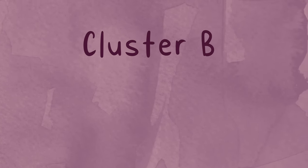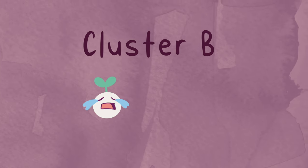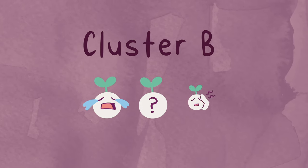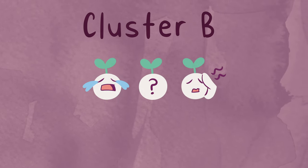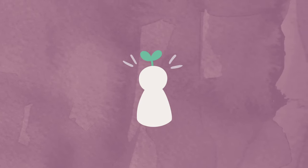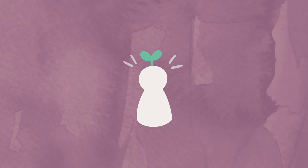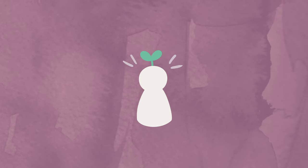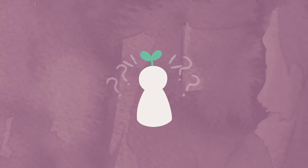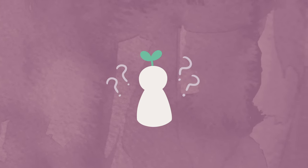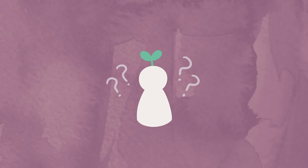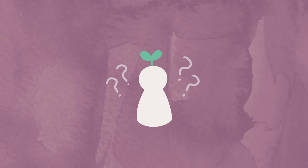ASPD is considered a cluster B personality disorder, meaning that the behavior is emotional, unpredictable, and dramatic. Approximately one to 4% of people in the US are suspected to have this condition, but it can be hard to tell as people often go undiagnosed.